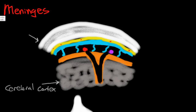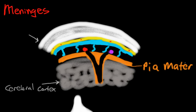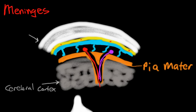The first layer of the meninges that fuses directly to the brain is called the pia mater. This layer is directly fused to the brain, and what's interesting about the pia mater is it has these little in-pouchings. These in-pouchings are areas that allow blood vessels to penetrate — penetrating arteries and penetrating veins travel through these little in-pouchings, known as the Virchow-Robin space. These are little in-pouchings for penetrating arteries and veins to provide blood flow to the brain tissue.